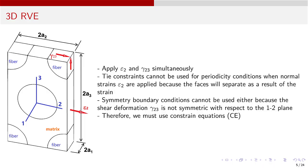Since we can't use symmetry or tie constraints, we use constraint equations (CE). These are equations that bind the displacement of pairs of nodes on opposite faces of the RVE, and may include a constant term that represents the applied strain, as explained in the textbook.